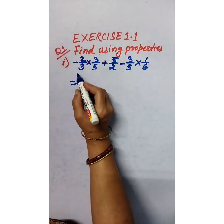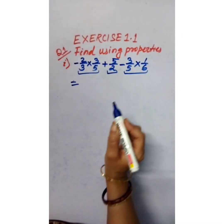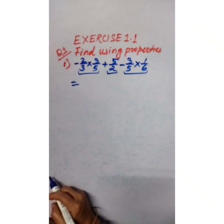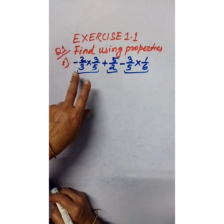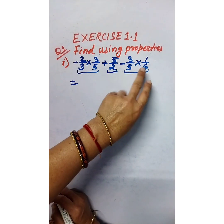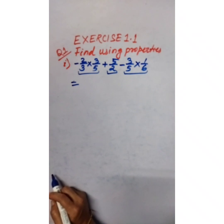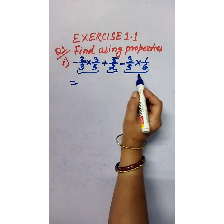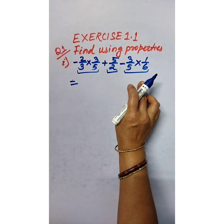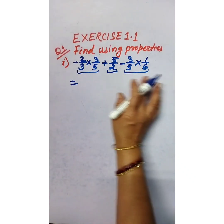Here in this expression, we have to find how many terms are there. This is one term, this is another term, and this is another term — three terms. A term means how many parts are separated by addition or subtraction. Now in these three parts, are you getting any common factor? No — all three parts do not have any common factor.